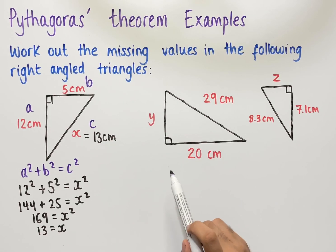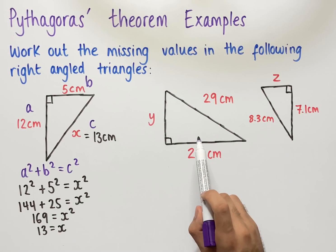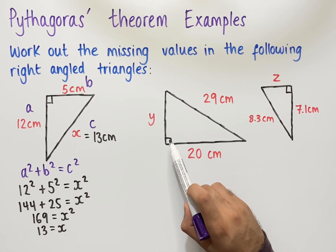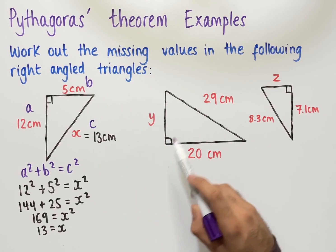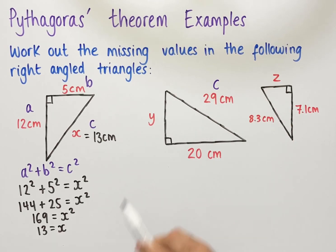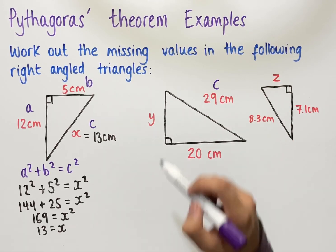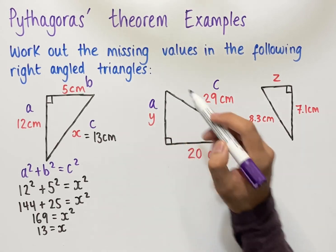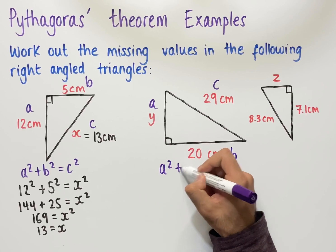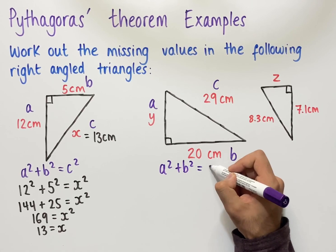In the second example, we first start by labelling the triangle with a, b, and c. So in this case, the hypotenuse is the side that's opposite the right angle, which is 29 centimetres. So that's labelled as c, and then we can label the other two sides however we like. So I'll label this as a, and this as b.